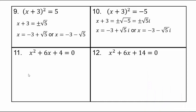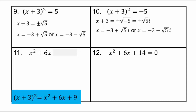For x² + 6x + 4 = 0, we want the form 'something squared equals number.' The expression x² + 6x almost matches (x + 3)², since (x + 3)² = x² + 6x + 9. But we have +4, not +9. The 4 is causing trouble — what if we had a +9? That's the key insight.